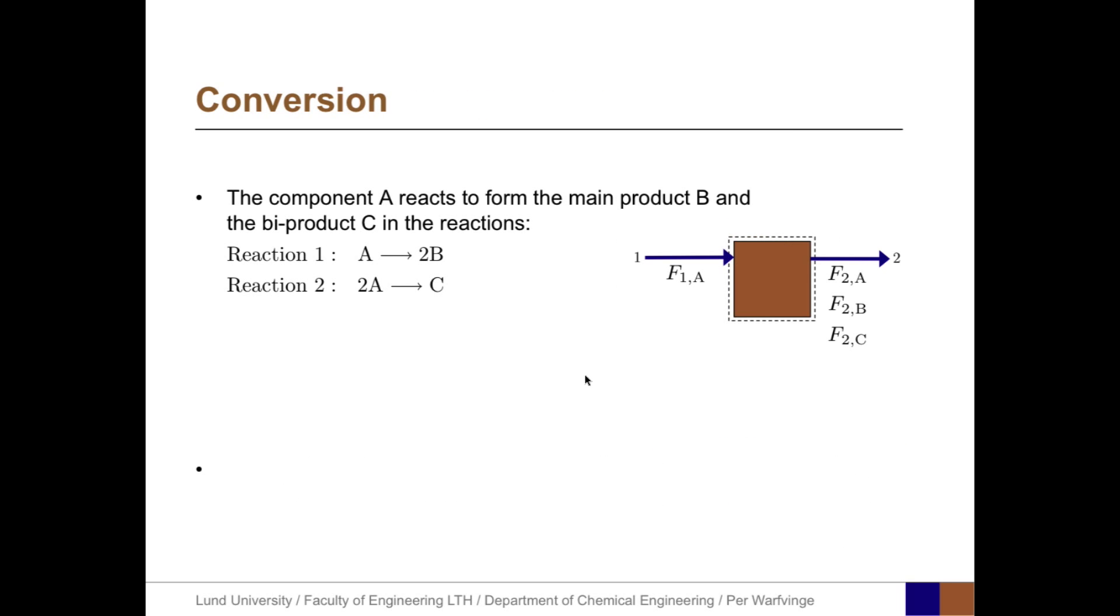Now it's time for some definitions. The first one is conversion. If a component A reacts to form a main product B and a byproduct C in the reactions, reaction 1: A yields 2B, and reaction 2: 2A yields C.